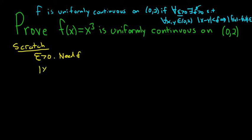And we will have x minus y less than delta. That's something we can work with. And this should imply that f of x minus f of y is less than epsilon. So we'll have to show that this is less than epsilon.